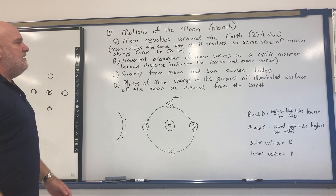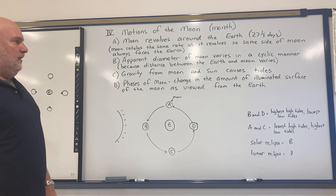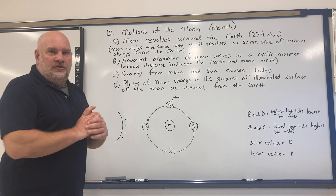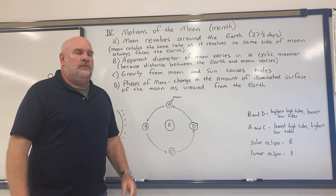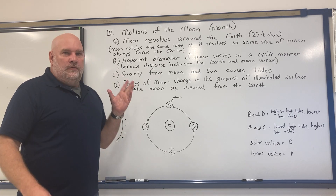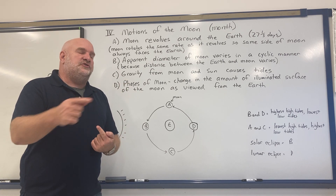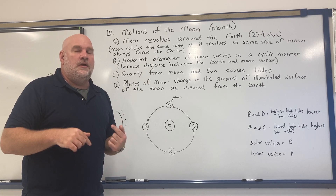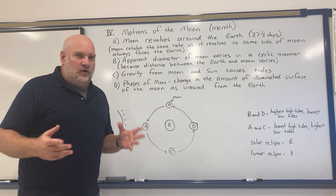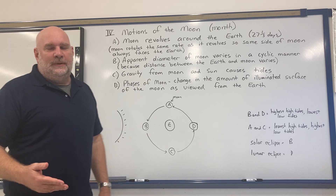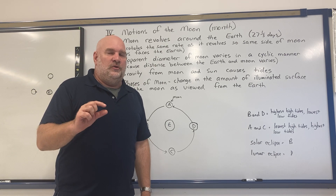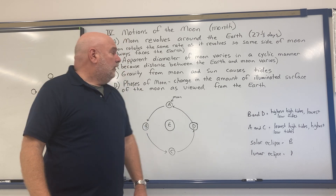The apparent diameter of the moon varies in a cyclic manner — sometimes in a month the moon looks a little bigger, other times a little bit smaller. That's because the moon does not travel in a perfect circle around the Earth. Rather, it travels in an ellipse, which is kind of like an oval, so sometimes they're a little bit closer and other times a little bit farther away, making the moon look bigger or smaller.